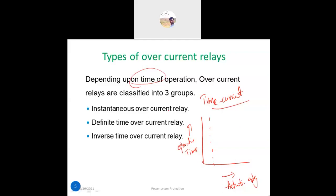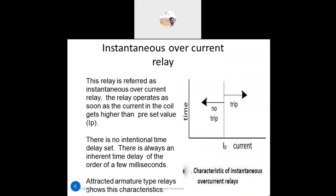The relays are classified based on time-current characteristics. We take instantaneous, definite time, and inverse time because the relay characteristics — operating time versus activating current — define how each relay type behaves. That's why we classify them based on time and current.